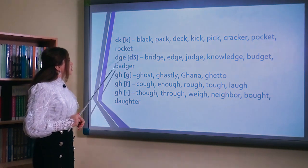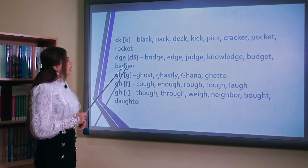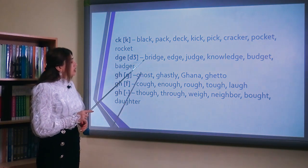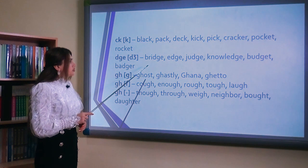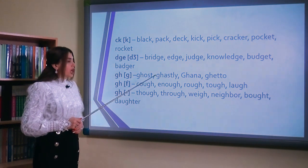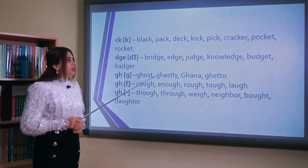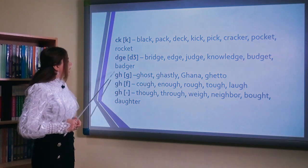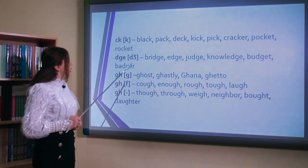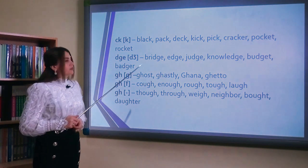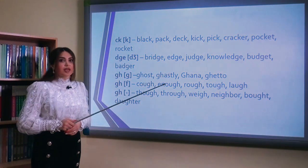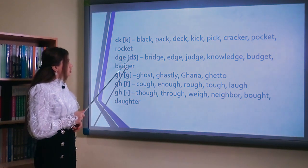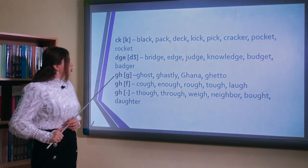The combination dge can be pronounced as /dʒ/: bridge, edge, judge, knowledge, budget, badger. Dge hərf birləşməsi /dʒ/ (c) səsini verir. Bu sözlərdə c səsinə nümunədir.